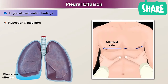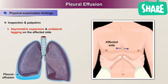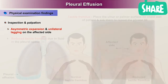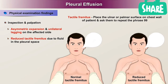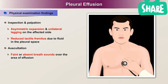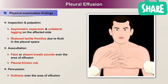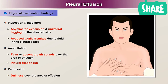Physical examination findings: on inspection and palpation, there is asymmetric expansion and unilateral lagging on the affected side, and reduced tactile fremitus due to the fluid in the pleural space. On auscultation, there are faint or absent breath sounds over the area of effusion, and a pleural friction rub may be heard. On percussion, there is dullness over the area of effusion.